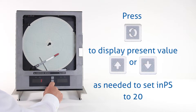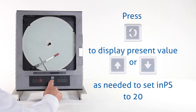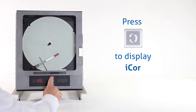For Celsius, this needs to be set to 20 for RTD input. So we're going to hit the up arrow key to get to 20. Once we have 20, we hit the scroll key.